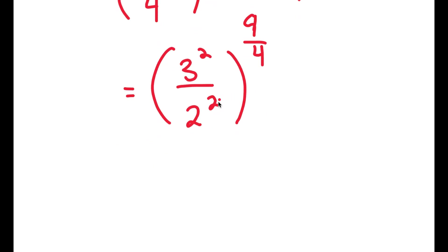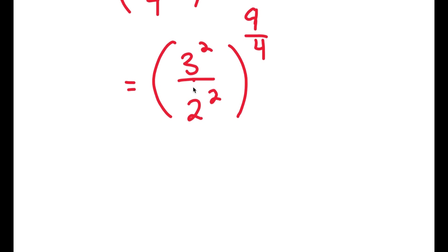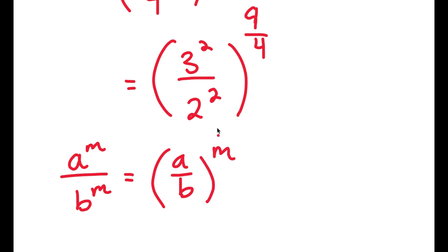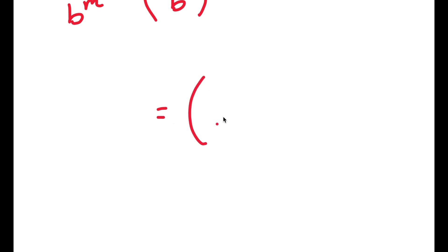Now, if I have something in the form a to the power of m over b to the power of m, this is the same thing as a over b to the power of m. So 3 to the power of 2 over 2 to the power of 2 is going to equal 3 over 2 to the power of 2.